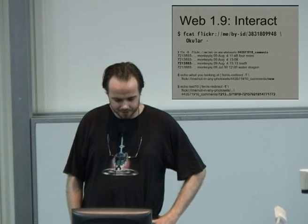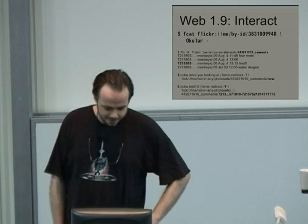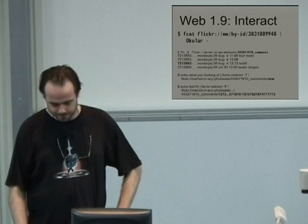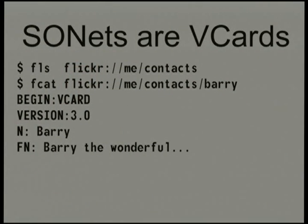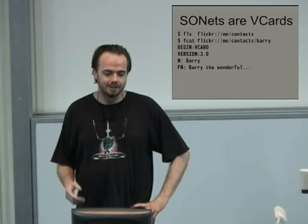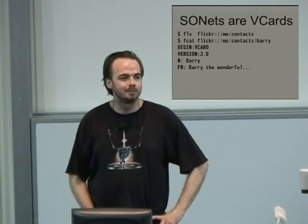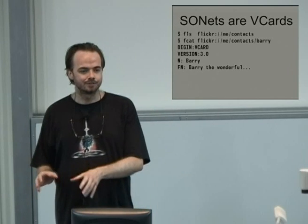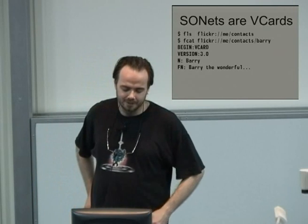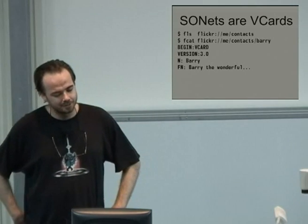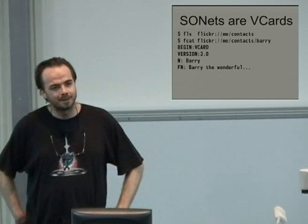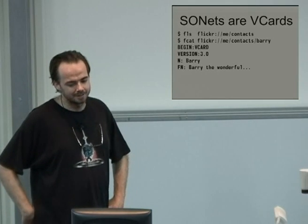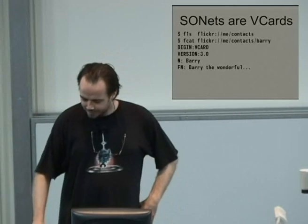For Flickr interaction: you can directly fcat an image straight off Flickr and pipe it into Okular or something else that accepts image data on standard in. You can create new comments, edit comments, and list things. For social networks like Facebook and Flickr, most people don't think of Flickr as a social network, but when you start friending people and getting feeds of their photos — whatever data I can get legally, I try to put in VCards. Under Flickr, if you have a friend called Barry and you fcat contacts/Barry, you just get a VCard file. I'd like to be able to take a VCard from one site and drop it into contacts on another site, and have LibFerris say 'I know this person, I'll send a friend request.'